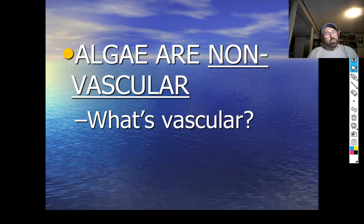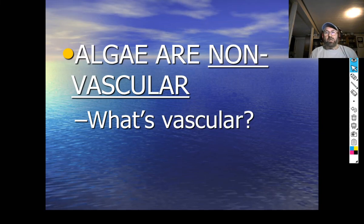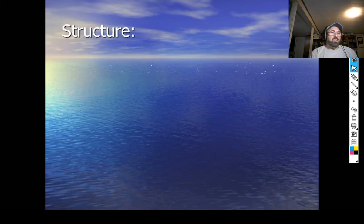Algae are non-vascular, which means they don't have tubes going through them. If you think about a stalk of celery, those stringy things are tubes leading up and down the stalk. Wood conducts material up through the trunk of the tree — that's vascular. These algae don't have that.